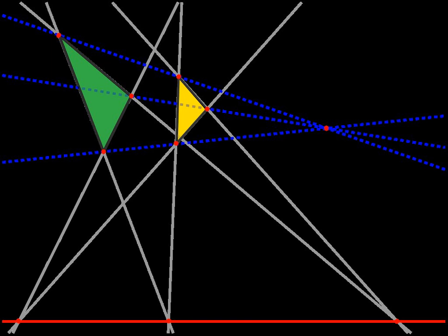Desargues' theorem is therefore one of the simplest geometric theorems whose natural home is in projective rather than affine space.